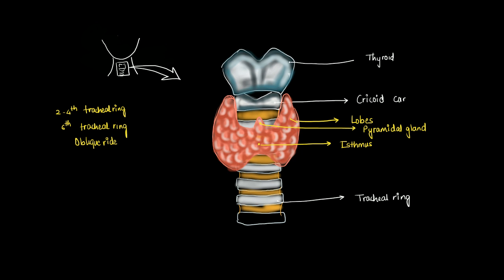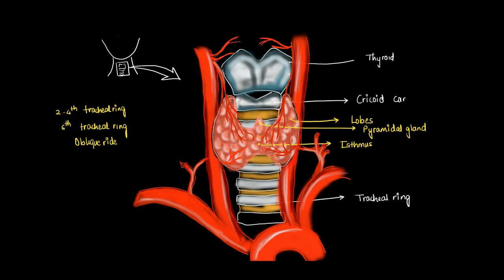Now let's have a look at the blood supply. The thyroid gland is a very vascular tissue. Here we have the aorta and the external carotid artery. The superior thyroid artery is a branch of the external carotid artery, and it enters the thyroid gland through the upper lobe, then combines with the inferior thyroid artery to supply the gland.